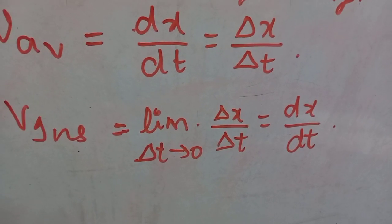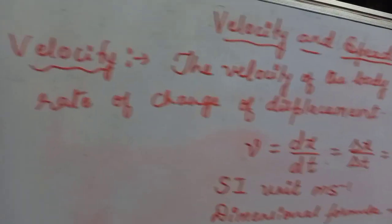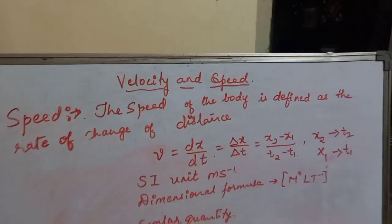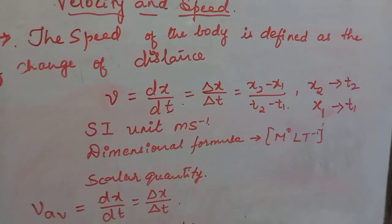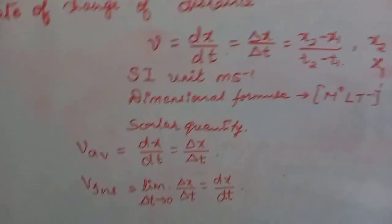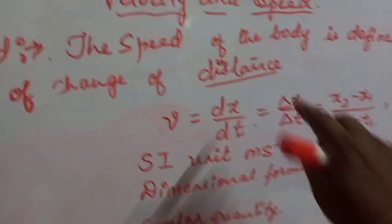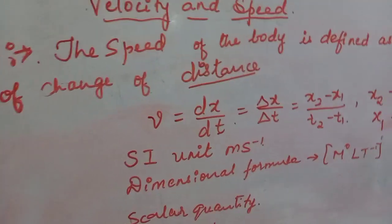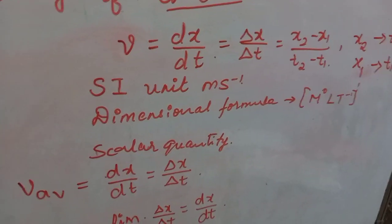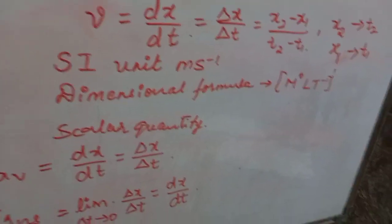Now let's talk about speed. Speed is similar to velocity but it is a scalar quantity. The speed of a body is defined as the rate of change of distance — note it is distance, not displacement, that we consider here.